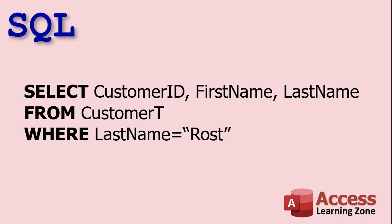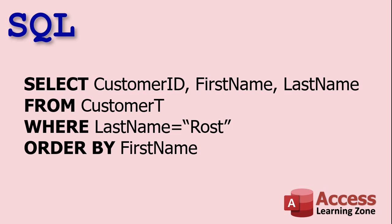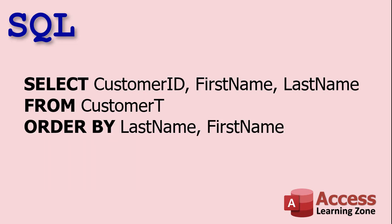If you want to add criteria, you use the WHERE clause. For example: SELECT CustomerID, FirstName, LastName FROM CustomerT WHERE LastName = 'Rost'. For multiple criteria you can use AND and OR — for example, WHERE FirstName = 'Richard' AND LastName = 'Rost'. You can also use the LIKE keyword. If you want to sort records, add the ORDER BY clause — ORDER BY FirstName, or ORDER BY LastName, FirstName. If you want to sort in reverse order, use the DESC keyword.